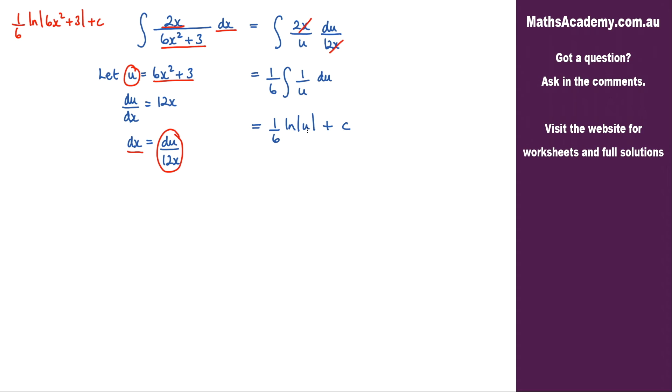And the last step is to substitute back in for u, and we know that u is 6x squared plus 3. So we get 1 over 6 log of 6x squared plus 3 plus the constant of integration.